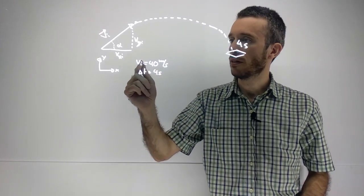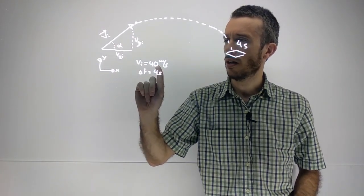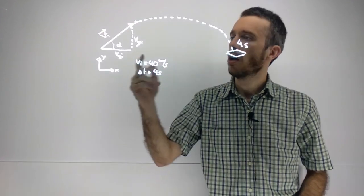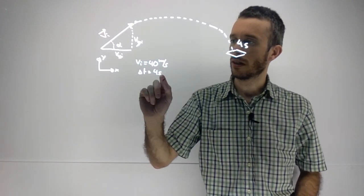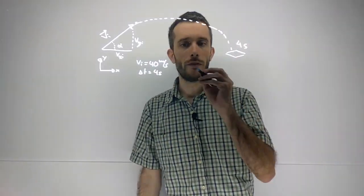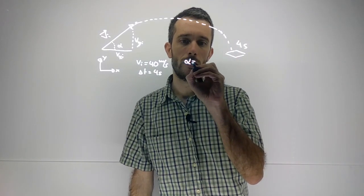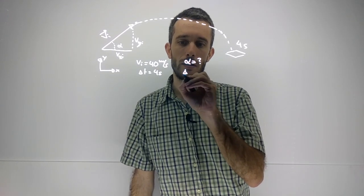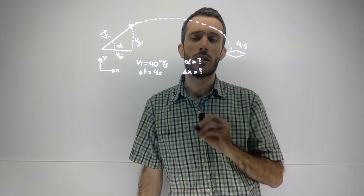In this problem here, we are given that the initial velocity had a magnitude of 40 m/s and the target lands 4 seconds later at exactly the same height from which it was shot. What we are looking for is the angle and the distance in x that the projectile traveled.